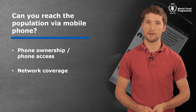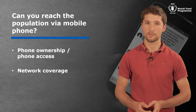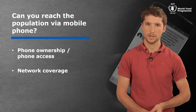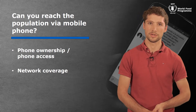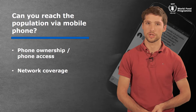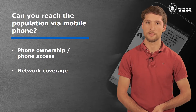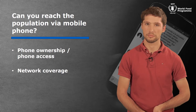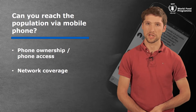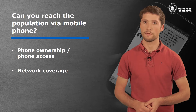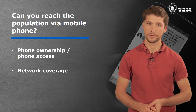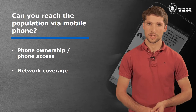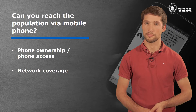There could be geographic areas you cannot reach because there is no network coverage. There may also be certain demographics you cannot reach — because even if households have a phone, some members may not be able to access it. For example, women often have less access to mobile phones, and this will probably create a significant bias.